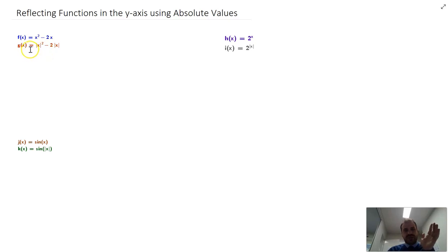So let's look at this first function, f of x equals x squared minus 2x. And then we have this other function, g of x equals the absolute value of x squared minus 2 times the absolute value of x. So you can see everywhere where x was, I've now put the absolute value of x.